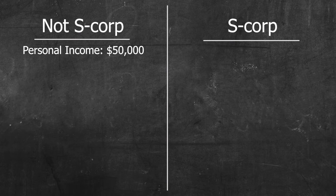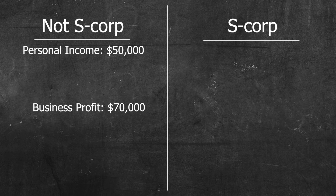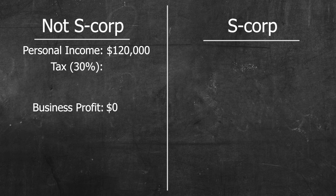Please keep in mind that the following example uses simplified numbers to demonstrate the difference in S Corp taxation — actual tax rates will vary. For example, let's say you have an LLC without S Corp status. You pay yourself $50,000 a year in salary, and your business had a $70,000 profit at the end of last year. Since your LLC doesn't have S Corp status, that $70,000 profit passes through to you, so you would actually report $120,000 in personal income. The tax rate for $120,000, let's say, is 30%, which means you'll pay $36,000 in taxes.